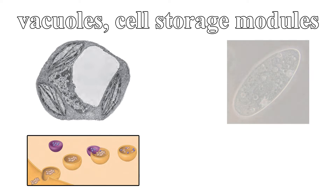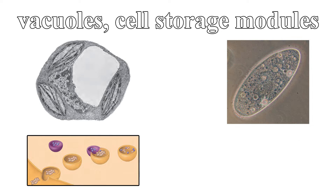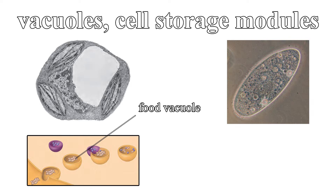Vacuoles are the storage modules of the cell. Produced by the endoplasmic reticulum, they are massive vesicles designed to hold anything from hydrolytic enzymes to poisonous compounds. Food vacuoles form as a result of phagocytosis — the devoured organism is stored inside a food vacuole before being digested by lysosomes.